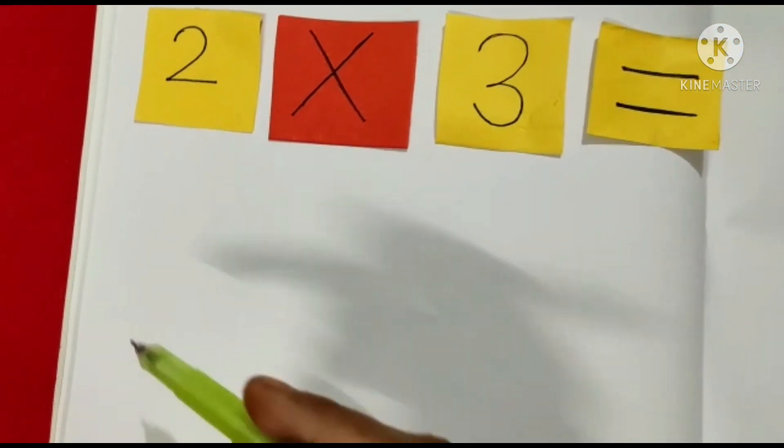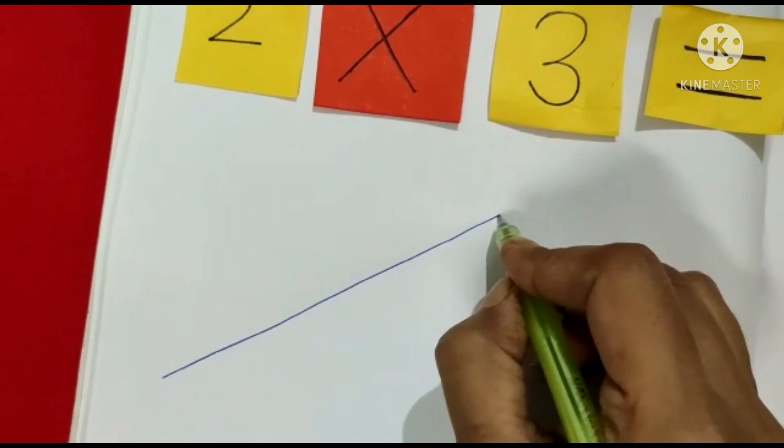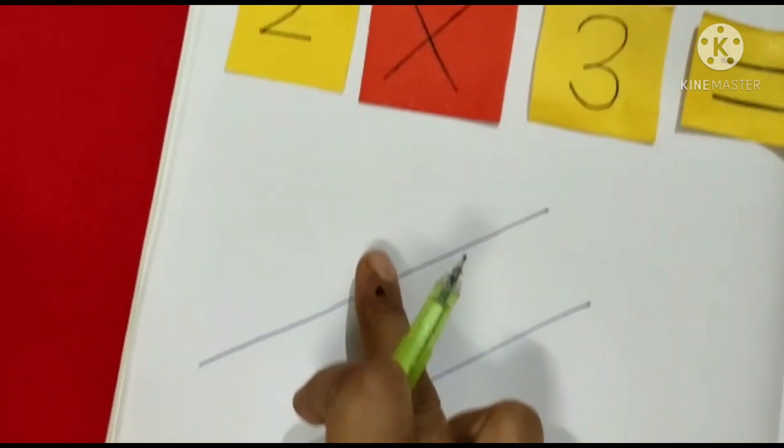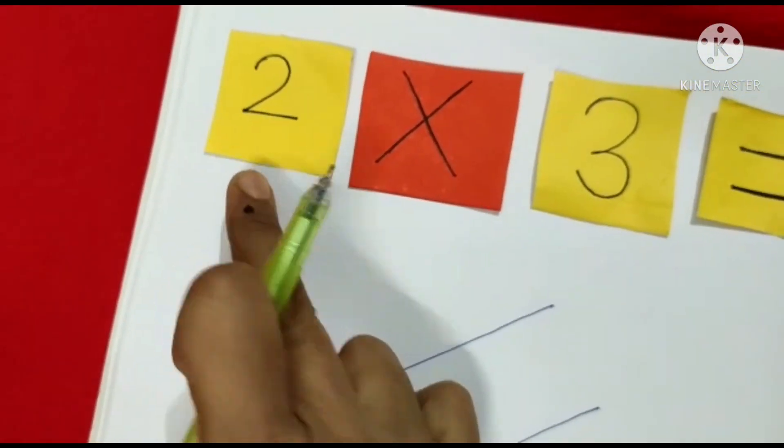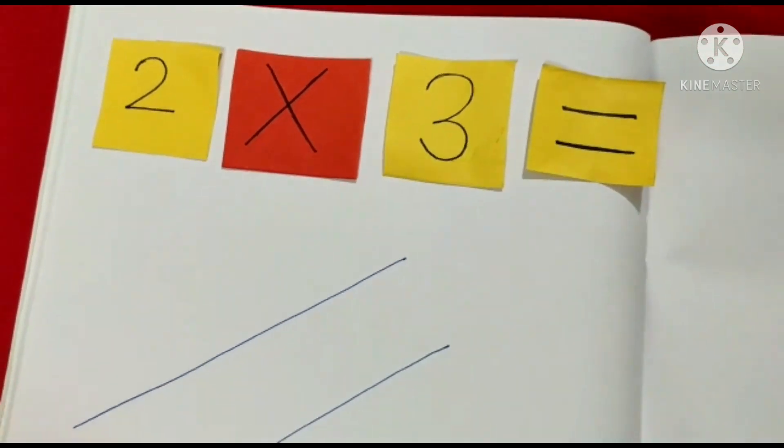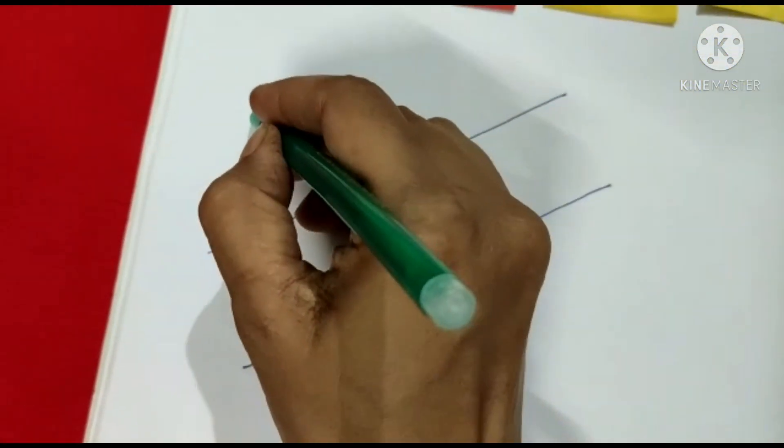So with the blue color I will draw slanting lines. How many lines? 2 because 2. 2 threes are how much? This we will find out. So 2, 3.